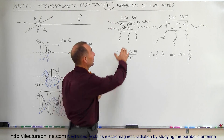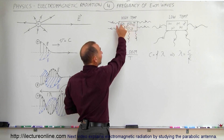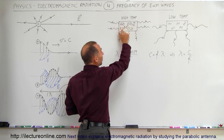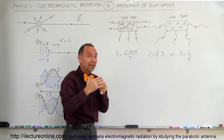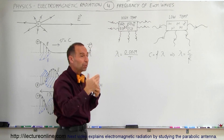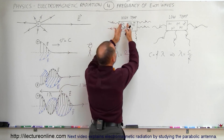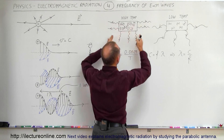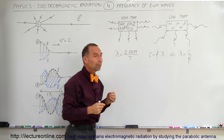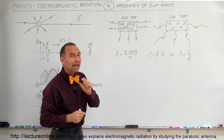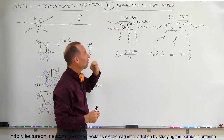The hotter the object is — assuming this would be a hot object — you can see that the vibrations of the atoms in there will be more violent. The amplitude will be greater, the frequency will be greater, and the energy being emanated from the object will be at a much higher frequency, therefore much shorter wavelengths.